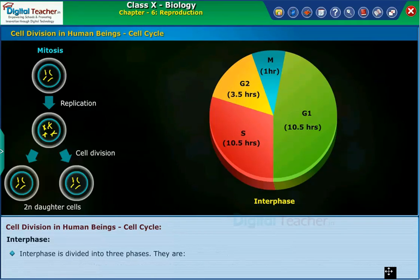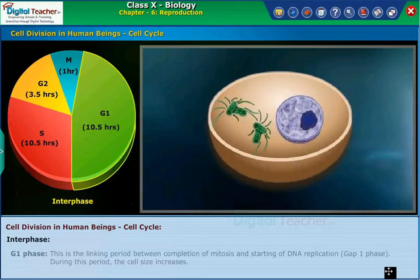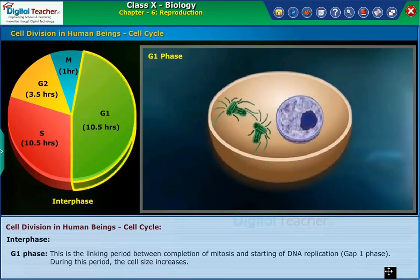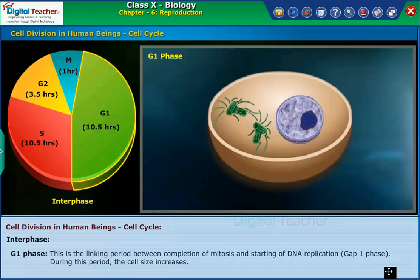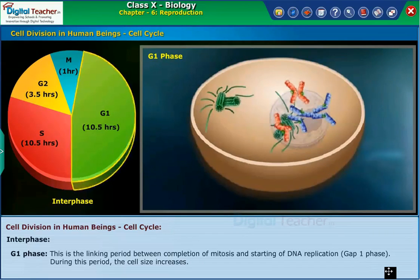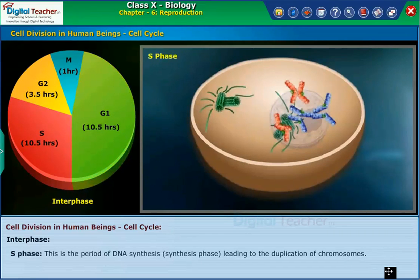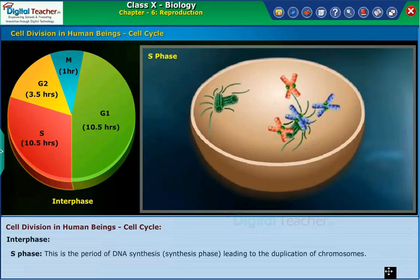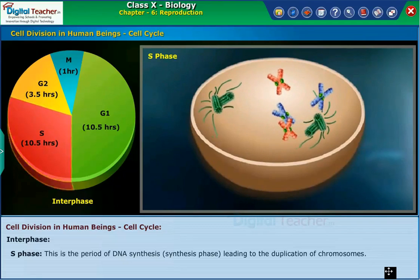Interphase is divided into three phases. G1 phase: this is the linking period between the completion of mitosis and the start of DNA replication. During this period, the cell size increases. S phase: this is the period of DNA synthesis, also called the synthesis phase, leading to the duplication of chromosomes.